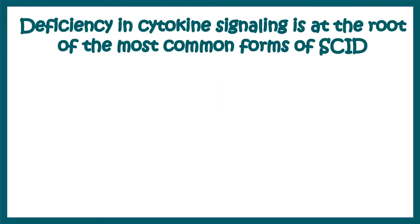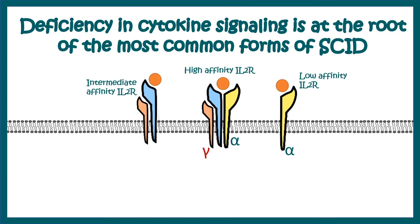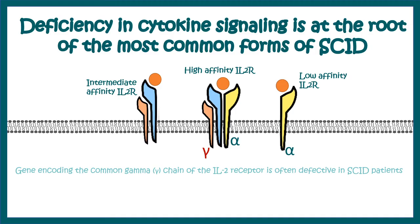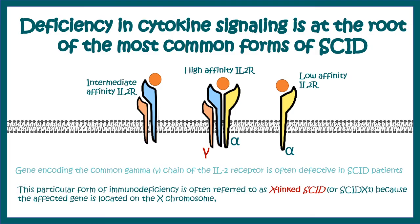Deficiency in cytokine signaling is at the root of SCID. Several cytokine receptor signaling pathways are compromised — for example, the IL-2 receptor gamma chain is actually mutated in SCID patients, compromising IL-2 receptor mediated signaling. The IL-2 receptor gamma chain is encoded on the X chromosome, making this X-linked SCID, which is more prevalent in males.